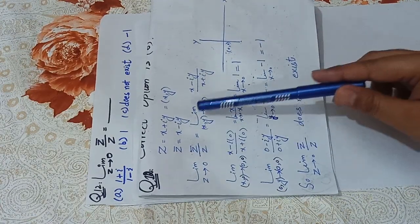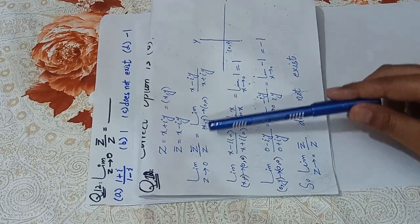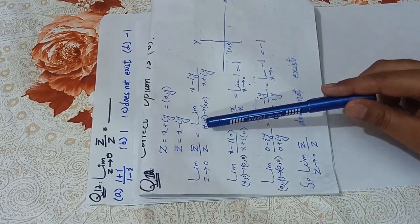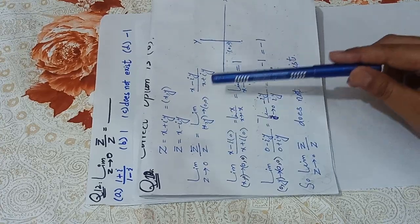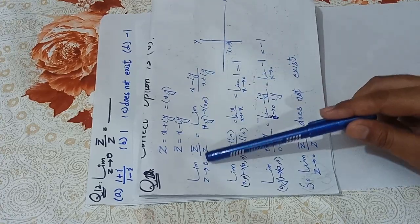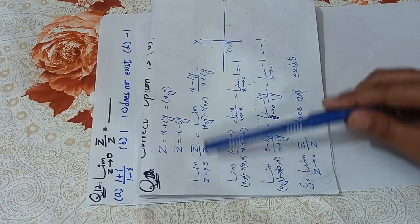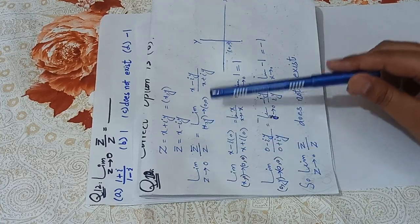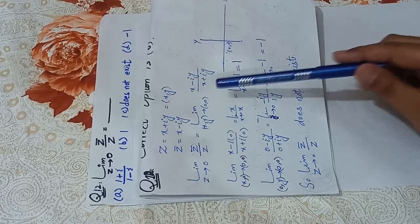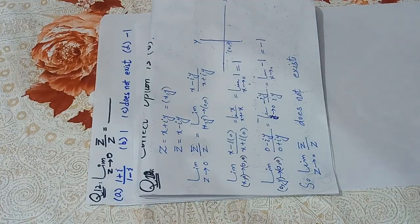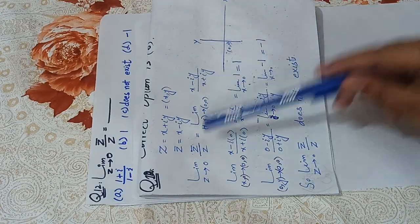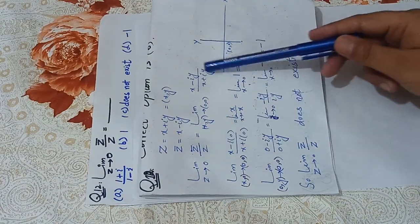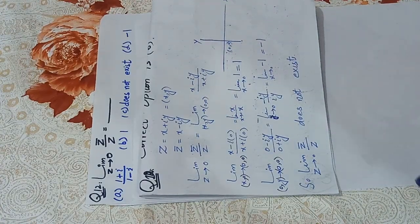We can write z as the ordered pair (x, y). Since z is in terms of x and y, the limit will also be in terms of (0, 0). We have put in those values — now there is one important point to observe here.